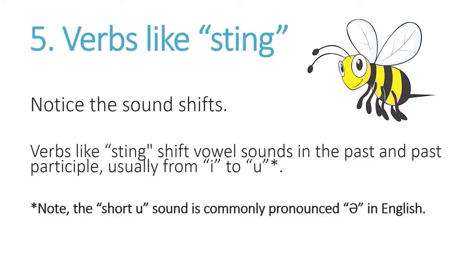With verbs like 'sting,' it follows a very similar pattern, but there's one small difference. You will notice sound shifts — verbs like 'sting' shift vowel sounds in the past and the past participle, usually from the 'i' or 'e' sound to an 'a' or short 'u' sound.